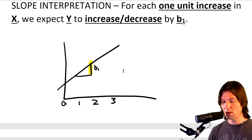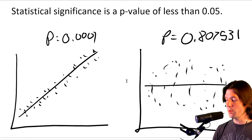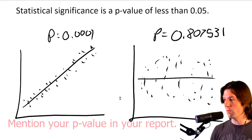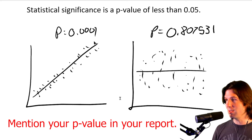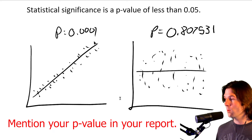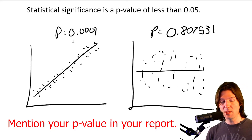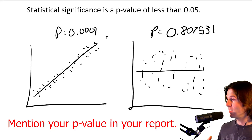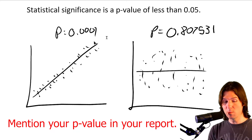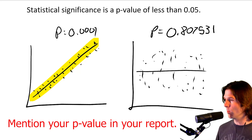Last but not least, we have statistical significance. Statistical significance relates to a p-value less than 0.05. When you see a low p-value, it is telling you that the line is statistically significant. Most importantly, we want to look at the p-value for the slope, not the intercept. I'll show you where that is in the output in a moment.